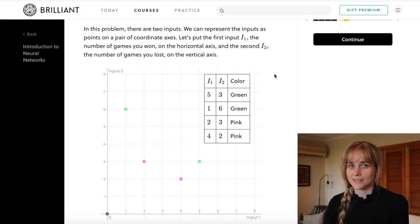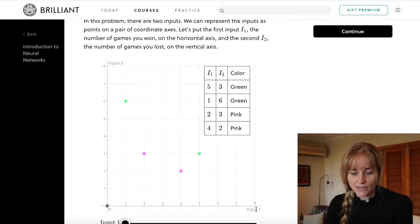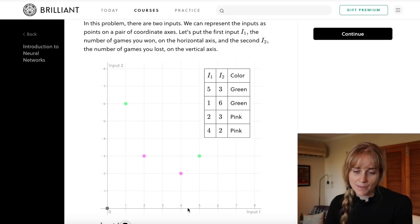In this example in the quiz we're imagining that we're playing a game against a robot opponent, and at some point the robot decides that it's had enough and doesn't want to play anymore. And we're going to plot some data to try and see if we can predict when the robot will want to keep playing and when it will want to quit. So on this plot here we have some data points where the input one along the x-axis is the number of games that we have won and input two on the y-axis is the number of games that we have lost.